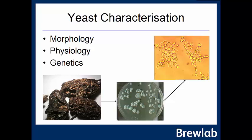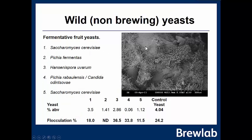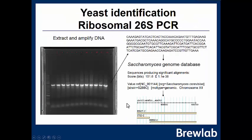Looking at the natural origins of yeast: fruits carry natural yeast colonies on their surfaces, which can be isolated on cultures and examined under the microscope. From one fruit sample we isolated five different yeasts growing alongside filamentous fungi. Culturing them in 1040 wort, a control yeast gave 4% alcohol, one of the Saccharomyces isolates gave 3.5%, and other yeasts gave lower alcohol with different flocculation characteristics. In a natural wild fermentation using these, it would be very interesting to observe the community succession and resulting flavour characteristics.